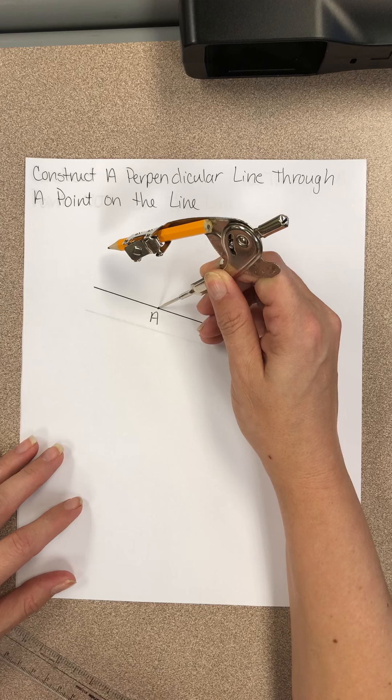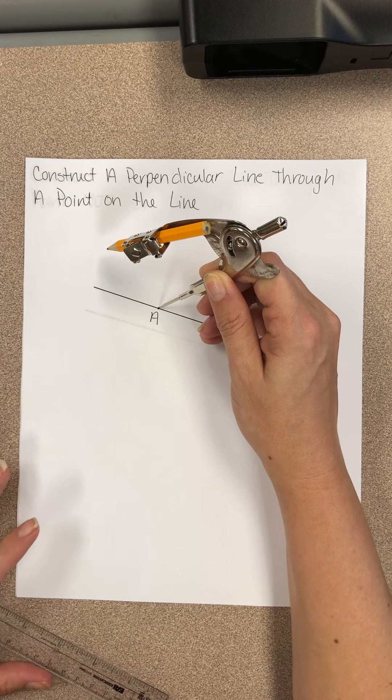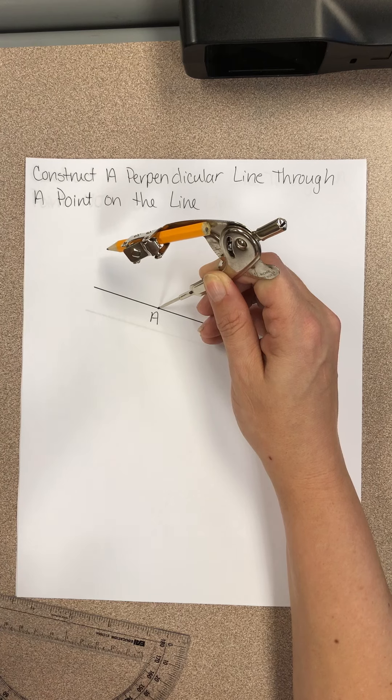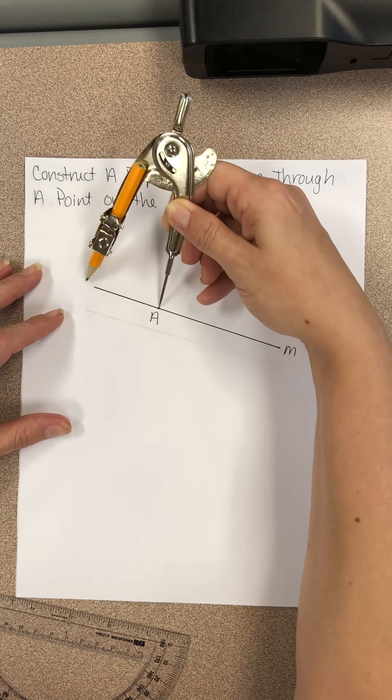And then it says, place the needle on point A. Make arcs on both sides of A intersecting line M. In other words, it needs to touch line M.